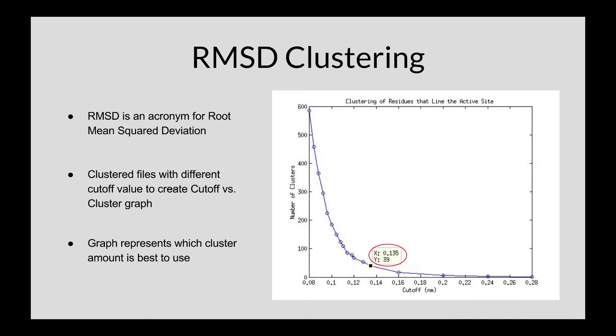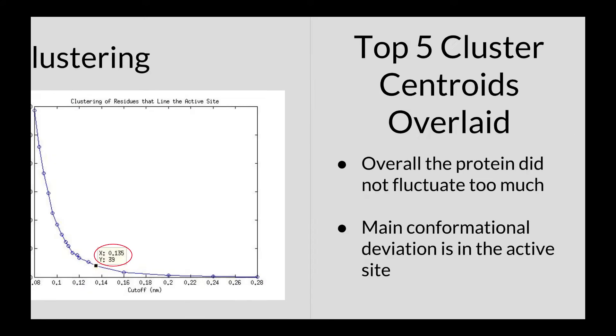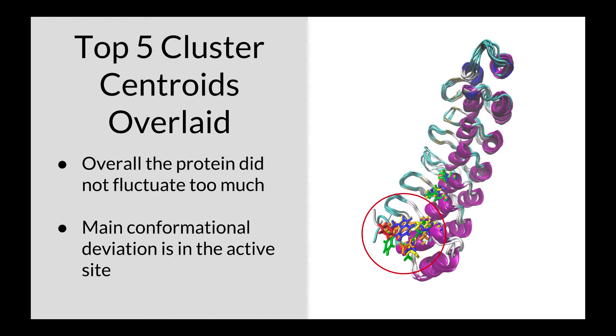which ultimately represents the overall distance between atoms. RMSD clustering was used to show the best representative structures of the molecular dynamic simulations of ASB9. These structures will help narrow down which centroids I will use to dock with creatine kinase.